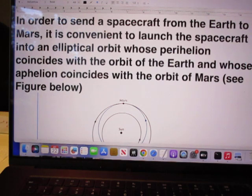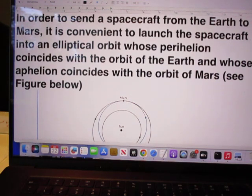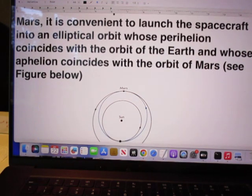In order to send a spacecraft from the Earth to Mars, it is convenient to launch the spacecraft into an elliptical orbit whose perihelion coincides with the orbit of Earth and whose aphelion coincides with the orbit of Mars, see figure below.